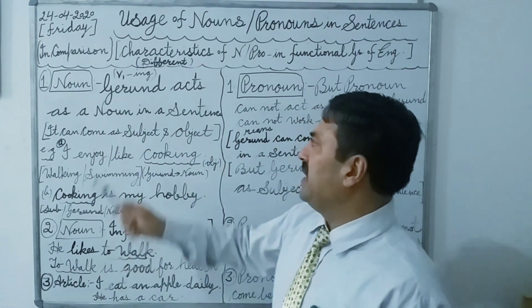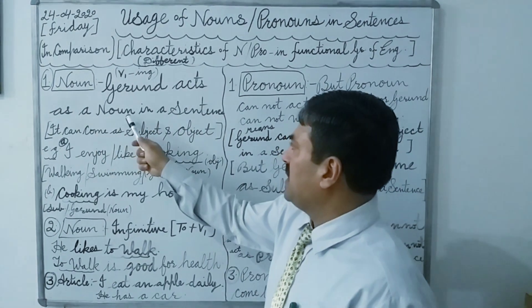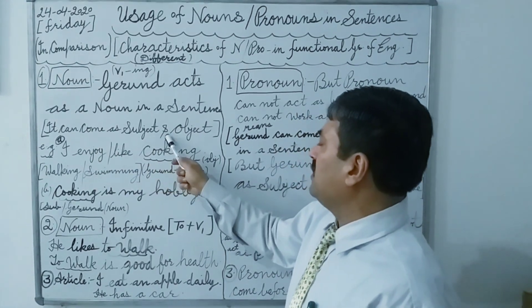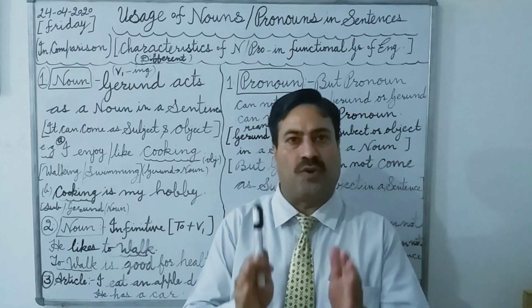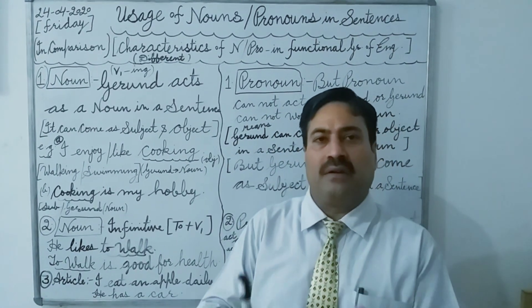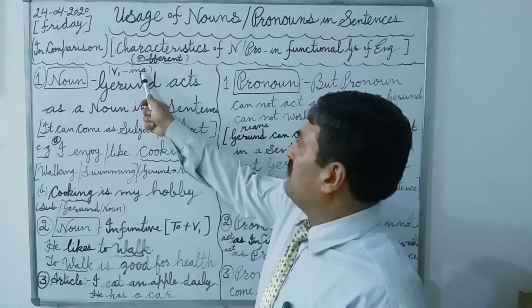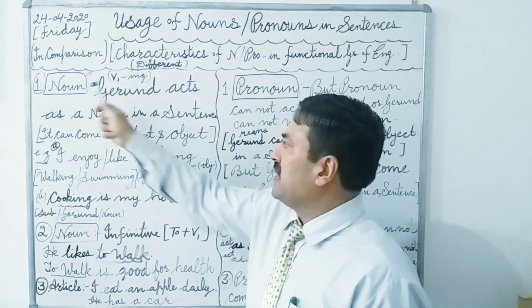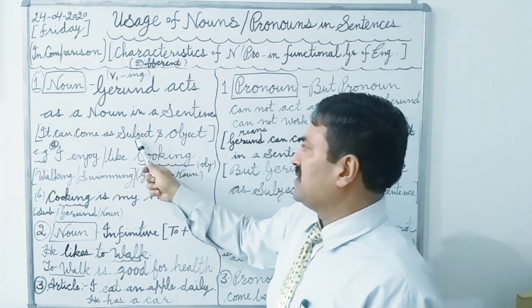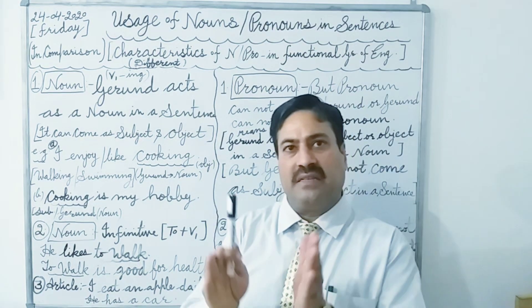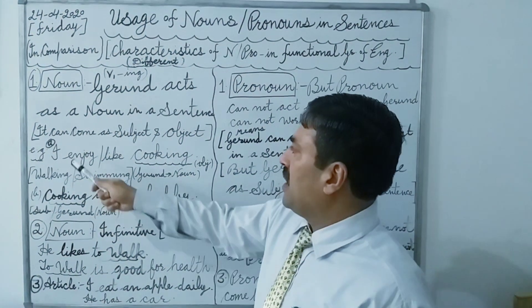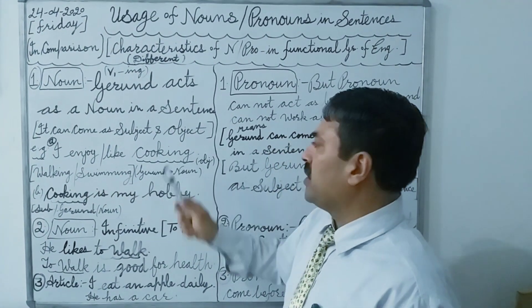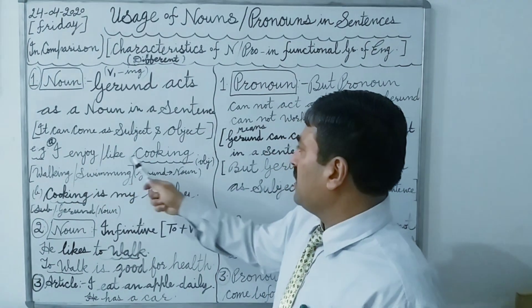First I will take gerund. In a sentence, gerund acts as a noun. It can come as a subject and object in a sentence. First of all we have to understand what is meant by gerund. When there is -ing with the first form of a verb and it acts as a noun in a sentence as a subject or object, then we can say that it is a gerund. For example, in the very first sentence we see: I enjoy cooking, or I like cooking.